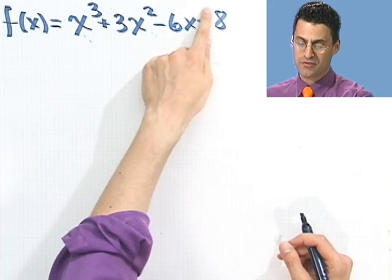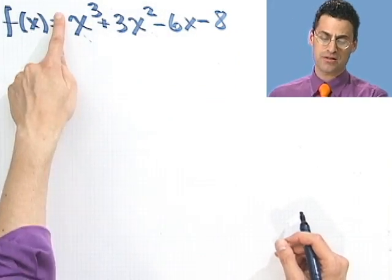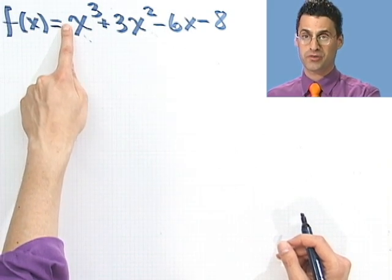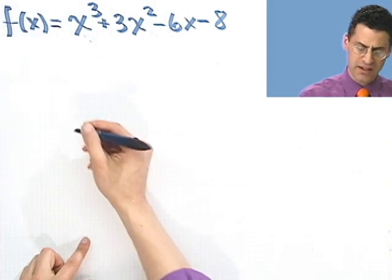So let's look for candidates of rational roots. Now where do you look? Well, I use the rational zero theorem, and the rational zero theorem says that if you're going to have rational zeros, their numerators will be factors of -8, and the denominators, in this case, will be factors of ±1.